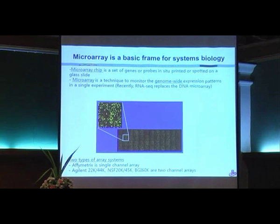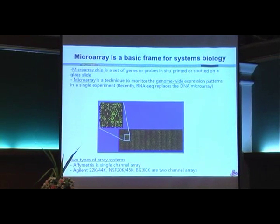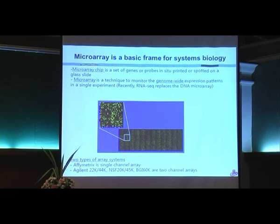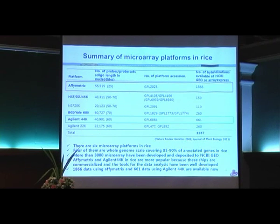Microarray is simply the basic platform for systems biology. The reason is that microarray can capture the whole genome-scale transcriptome. There are so many reference data available, and there are two types of arrays. Affymetrix is a single-channel array and the others are mostly two-channel arrays, though two-channel data can also be used for single-channel array experiments. I summarize the microarray data platforms in rice — there are six array platforms.